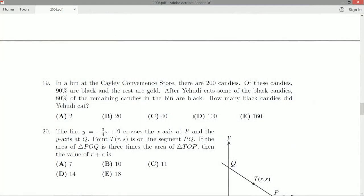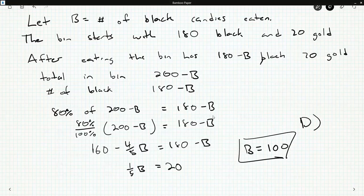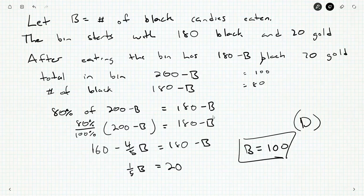And that would be an answer of D. Now, if we were feeling a little uncomfortable, we might ask ourselves, well, does this actually make sense? Yeah. 200 minus 100 is 100 candies left in the bin in total. 180 minus 100 is 80. And 80 is certainly 80% of 100. So it does all work out.